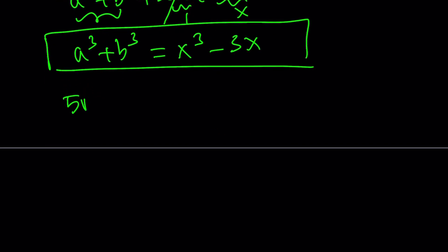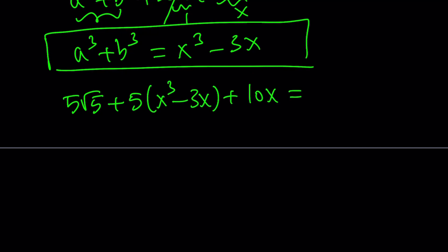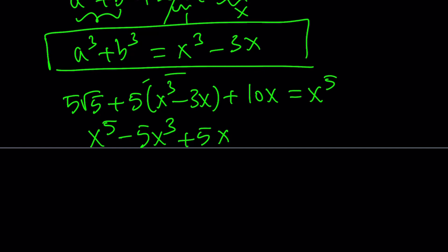Quintic equations aren't always nice, but this one is. After the replacement, we get x⁵ − 5x³ + 5x = 5√5. The −15x + 10x gives −5x, which is why that coefficient appears. Everything is put on the right-hand side.